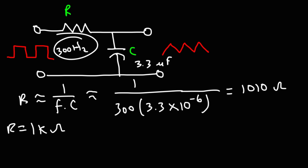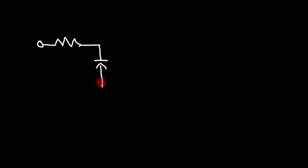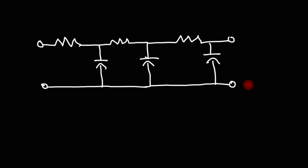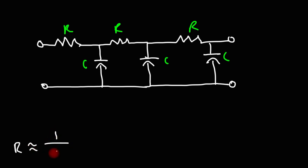Now let's talk about how we can convert an incoming square wave into a sine wave. Instead of using one RC network, we need to filter the signal using three RC networks — this is the first, second, and third RC network. Because we have three RC filters, the amplitude is going to be greatly reduced. We're going to choose the same values for R across all three resistors and the same value of C for all three capacitors. To get the appropriate R and C values, we use the same formula: R ≈ 1/(FC). It could be more or less than that value, but it's a good starting approximation, and you can adjust accordingly to get the best sine wave possible.